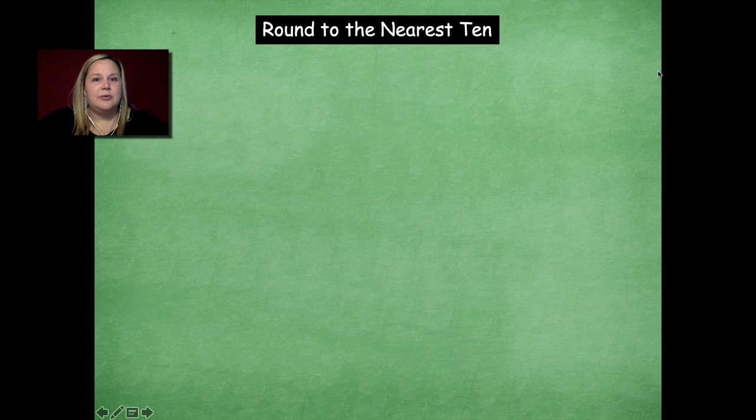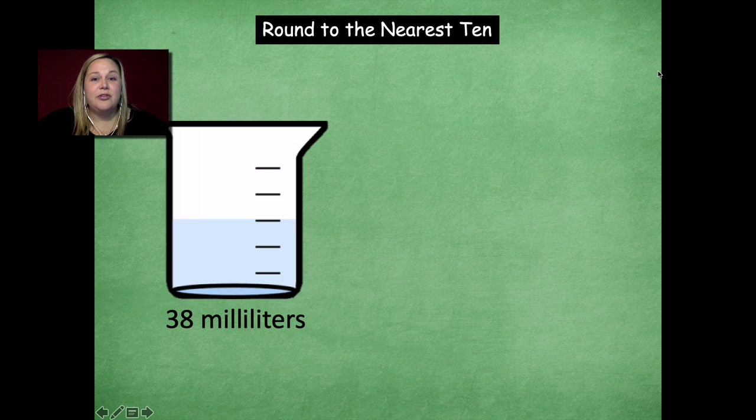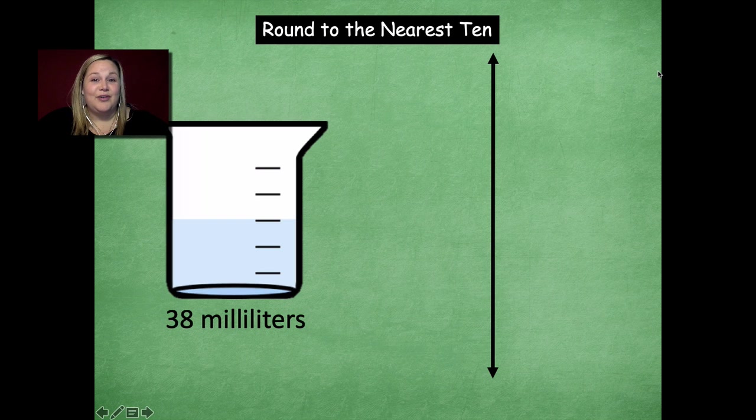Okay, all right, so let's do another one to practice. So here's the 38 milliliters in this beaker. So we're going to start with our vertical number line. You're going to label your two endpoints. And how many tens are there in 38 milliliters? Yeah, there's three tens. So that's 30.